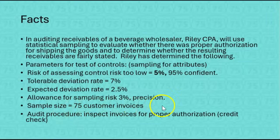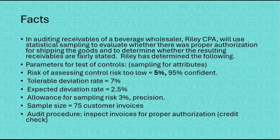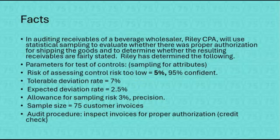In the end, 75 customer invoices will be sampled, and the audit procedure is to inspect invoices for proper authorization. Riley wants to know how often someone was able to order goods and receive a shipment without the customer's credit being checked. The sample size is 75, which comes from a 95% confidence table set up for audit sampling — if our tolerable rate is 7% and our expected error rate is 2.5%, the table tells us to look at 75 customer invoices.